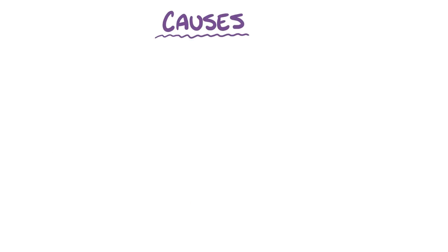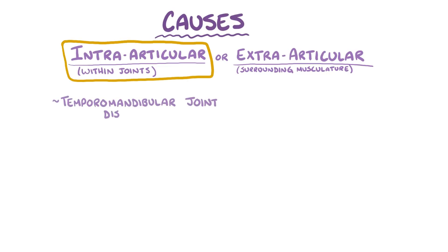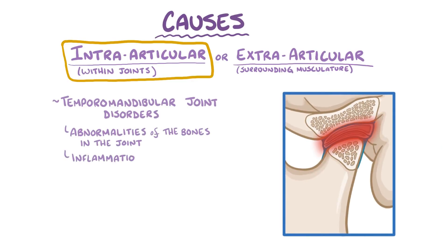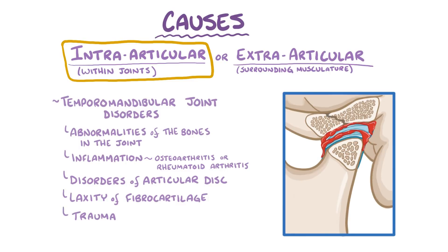The causes of temporomandibular disorders can be categorized as intraarticular, within the joint, or extraarticular, involving the surrounding musculature. Intraarticular causes are called temporomandibular joint disorders, and they include abnormalities of the bones in the joint, inflammation from conditions like osteoarthritis or rheumatoid arthritis, disorders of the articular disc, laxity of the fibrocartilage allowing for temporomandibular hyper- or hypomobility, or trauma resulting in structural damage or bleeding inside the joint.